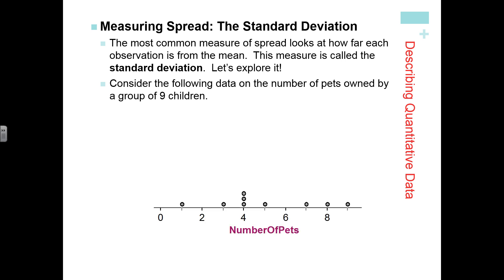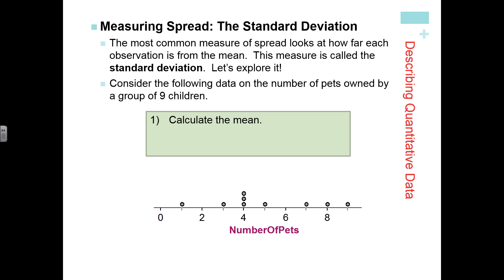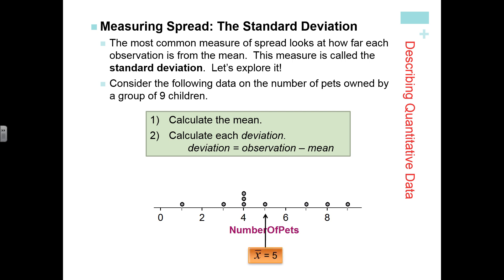Looking at the number of pets owned by a group of nine children, with the distribution shown as a dot plot, to calculate standard deviation we first calculate the mean, then calculate each deviation, which is just the observation minus the mean. In this case, the mean is 5. For the observation of 1, the deviation is 1 − 5 = −4. For the observation of 8, the deviation is 8 − 5 = 3.